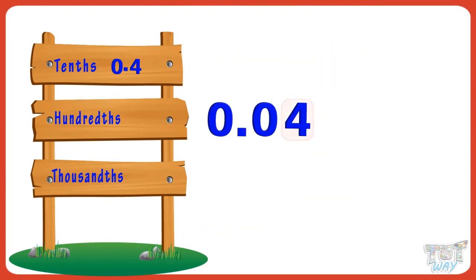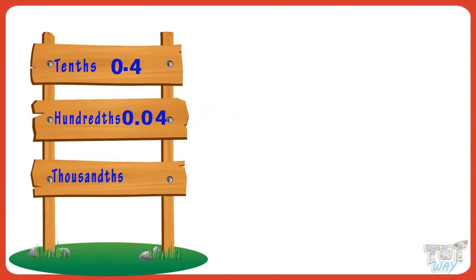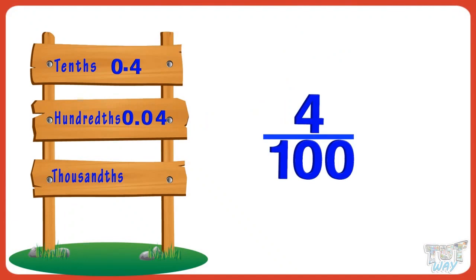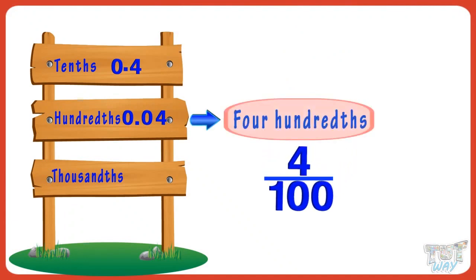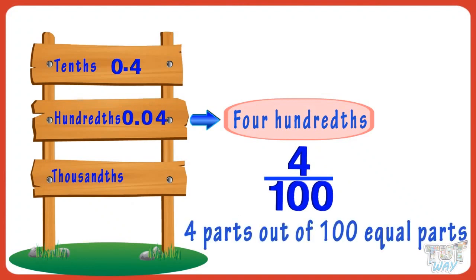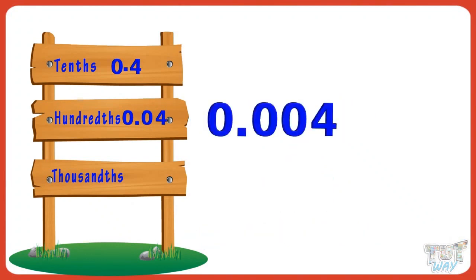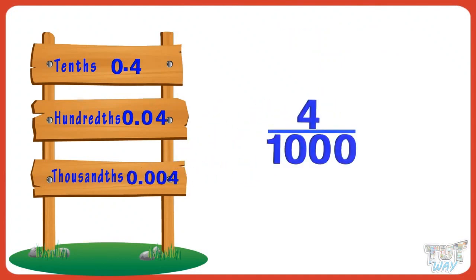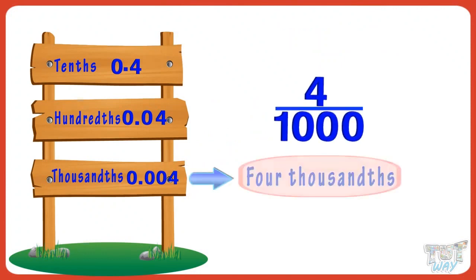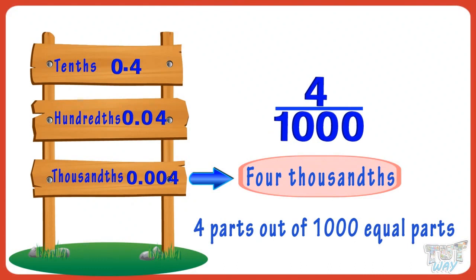The second place to the right of the decimal point is called the hundredths place. Now kids, the third place to the right of the decimal is called the thousandths place. 0.004, or 4 by 1,000, we name it as four-thousandths, and it represents four parts out of one thousand equal parts.